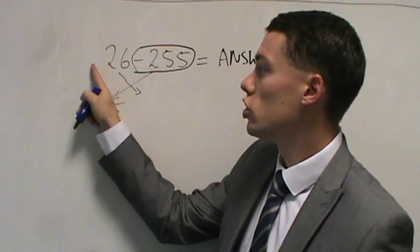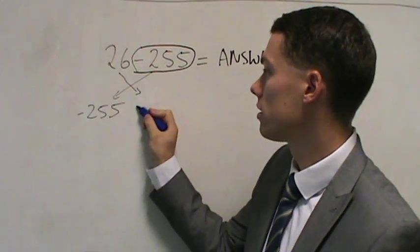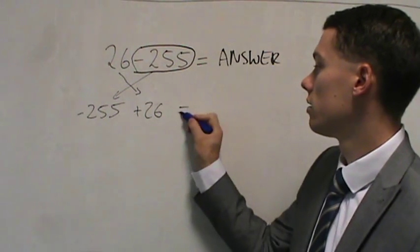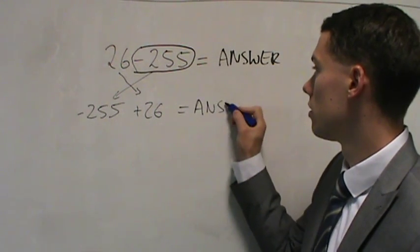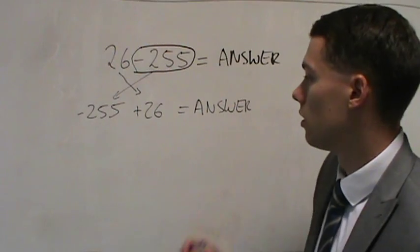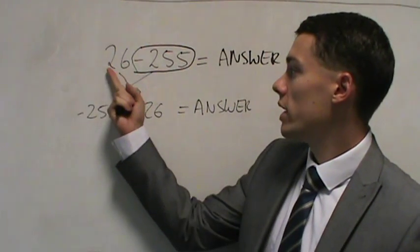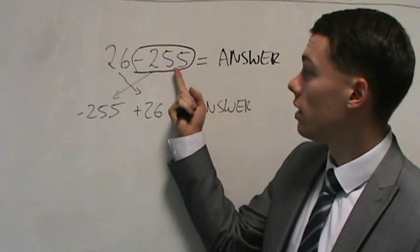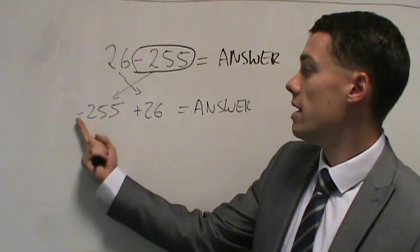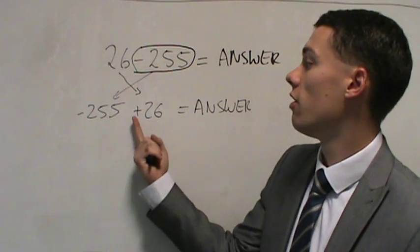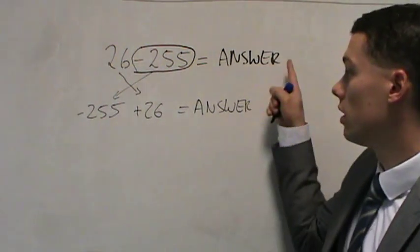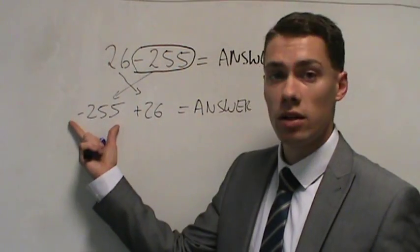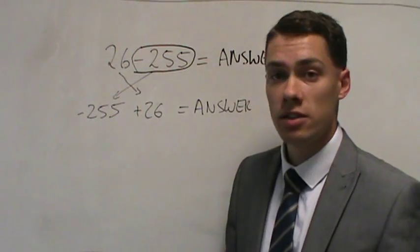And then you put your positive 26 second. Remember if there's no symbol, you assume it means positive. So we're going to put a plus 26 here. So this gives us our answer. 26 take away 255 is exactly the same question as negative 255 plus 26. It will give you the same answer.